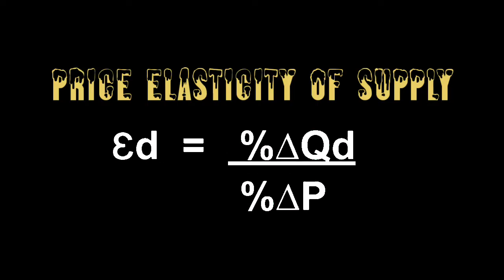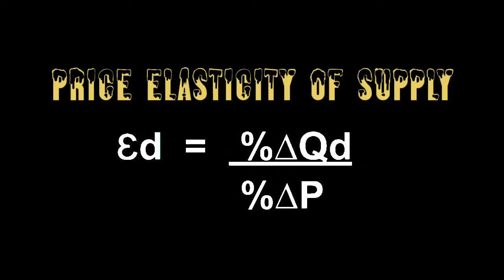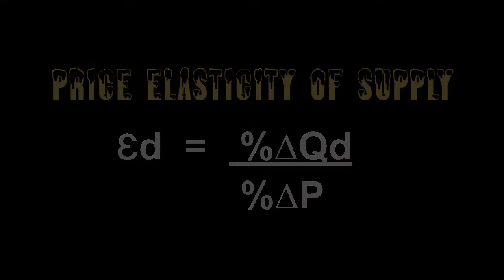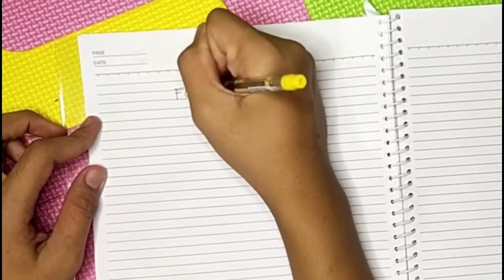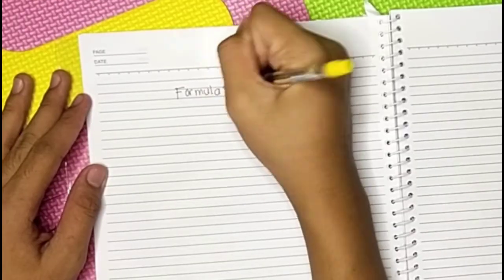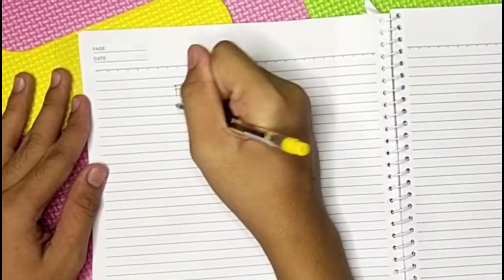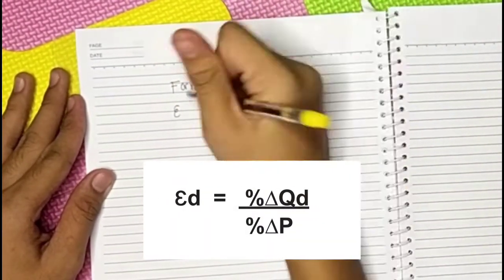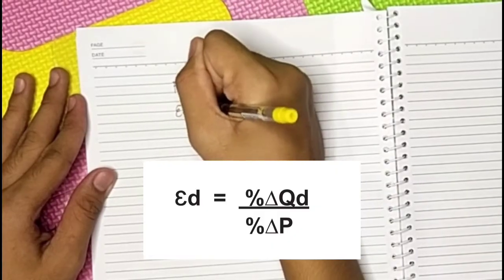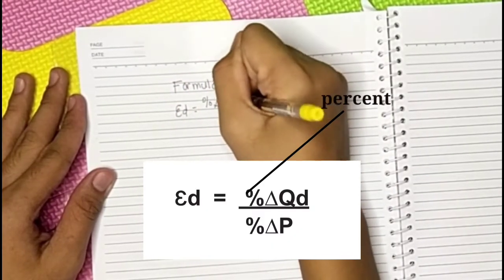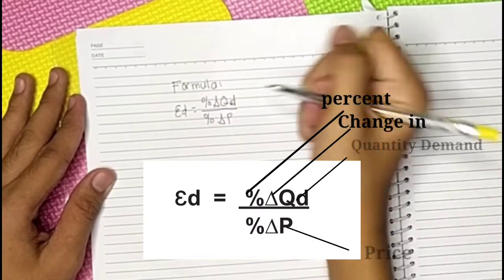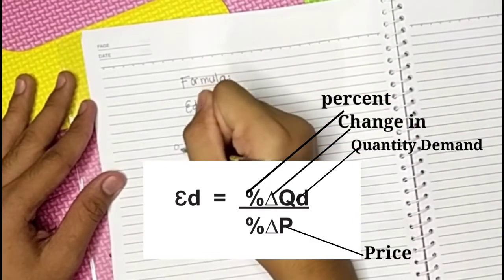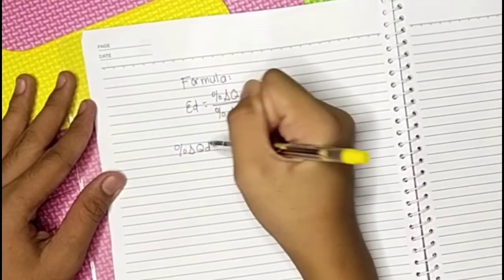Today we're going to solve price elasticity of supply using the formula. So without further ado, let's get started. The first thing you need to do is write the formula. The formula for price elasticity of supply or demand is ED equals percent change in quantity demand over percent change in price.